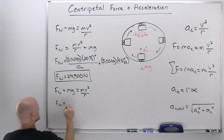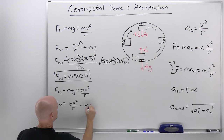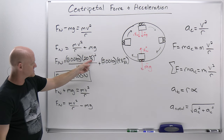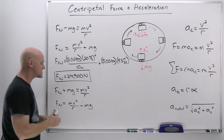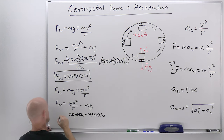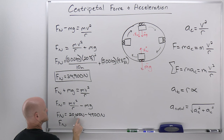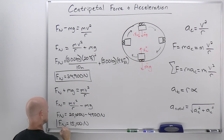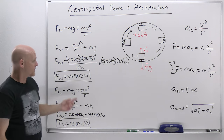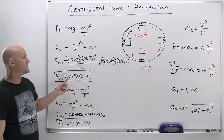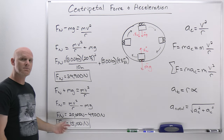Setting up the equation at the top: N + mg = mv²/r. Solving for normal force: N = mv²/r − mg. The numbers haven't changed: 500 kilograms times 20 meters per second squared over 10 meters gives 20,000 newtons, and 500 kilograms times 9.8 meters per second squared gives 4,900 newtons. So 20,000 minus 4,900 gives a normal force of 15,100 newtons at the top — much less than the 24,900 at the bottom.